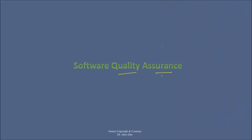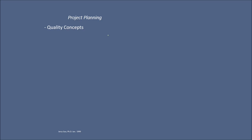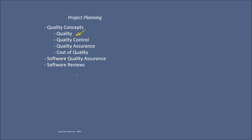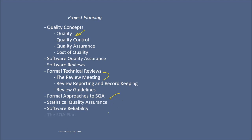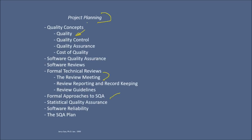We are discussing software quality assurance — where it is required, what is the meaning, and the project planning. In project planning, we are interested in quality concepts: what is quality, quality control, quality assurance, cost of quality, software quality assurance, software views, formal technical reviews, review meetings, reporting and record keeping, reviewing the guidelines and formal approaches to SQA, statistical quality assurance, software reliability, and the SQA plan. Software quality assurance is an umbrella activity which includes various aspects.